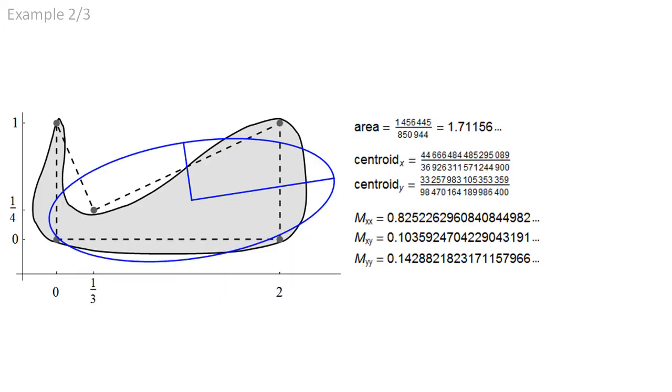The curve in this example is generated by the dual three-point scheme. The area, centroid, and inertia are as indicated. The values are relevant for physical modeling and animation.